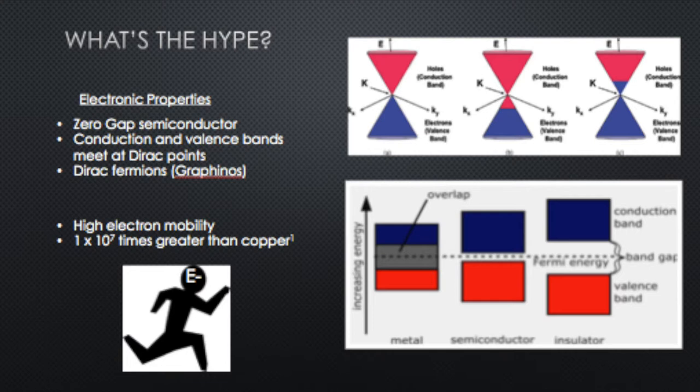In the case of graphene, the conduction and valence bands meet at the Dirac point, as you can see in the image on the top right. Electrons at this Dirac point are known as Dirac fermions, and in the case of graphene, they're actually massless—they have no mass. This is the main reason why graphene has such interesting electronic applications.